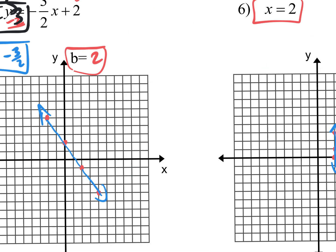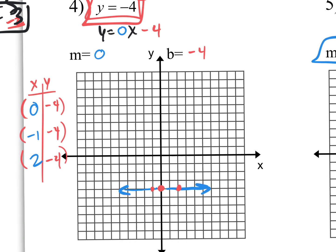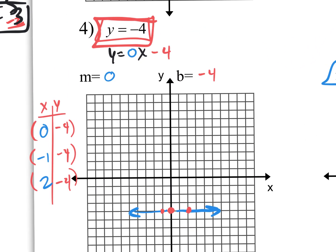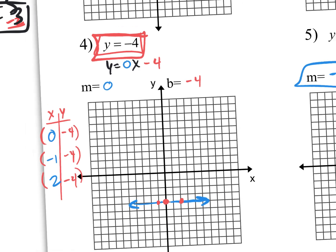If it's y equals a number, go to the y-axis, go to that number, draw a horizontal line right through it. That's the quickest way of doing it.